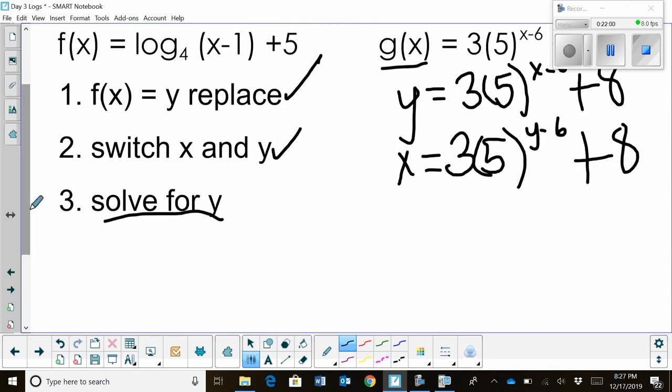We want to isolate this base of five. So what do we do first? We subtract eight. So we're going to have x minus eight, and that's minus eight right there, if you need to put that, is equal to three times the quantity five to the y minus six.